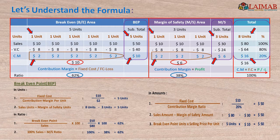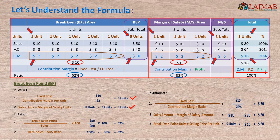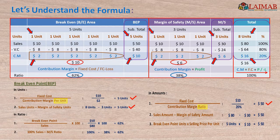Now the formula for breakeven point. For units: first, fixed cost $10 divided by contribution margin per unit $2 gives 5 units, because fixed cost is recovered by contribution margin at the breakeven point. Second, total sales 8 units minus margin of safety 3 units also gives 5 units breakeven point — breakeven sales and margin of safety sales equal total sales. For amount: fixed cost $10 divided by contribution margin ratio 20% gives $50 breakeven point. Contribution margin per unit finds breakeven units; contribution margin ratio finds breakeven amount.